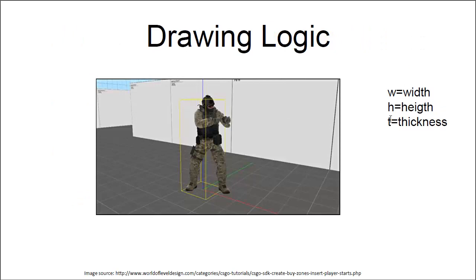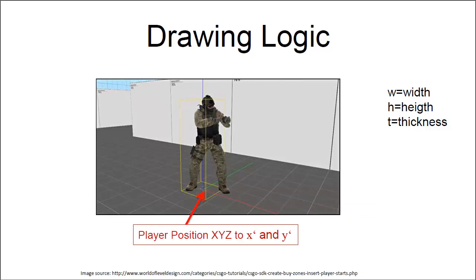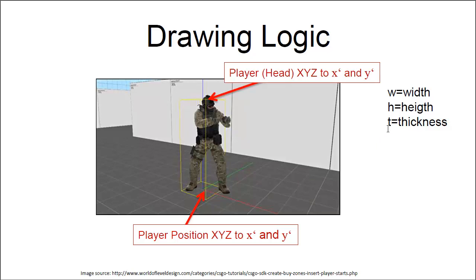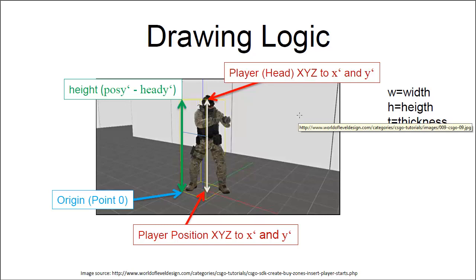Now let's look at the drawing logic when we apply what we just learned to creating ESP boxes. It doesn't matter what you draw next to the player — it's always using this projection matrix. We have the player position at the bottom which we need projected to our screen, as well as a head position or something approximately in that area. You can use the head as a bone or something similar from the aimbot tutorial. When we have these two points, we automatically have the height: height is position Y prime minus head Y prime.